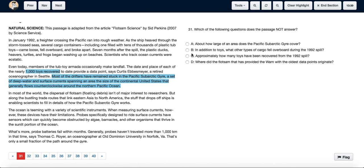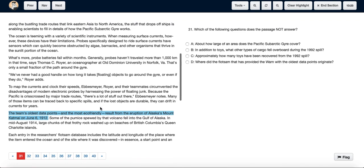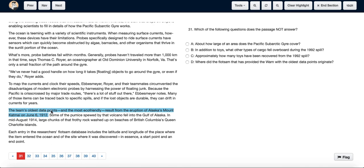Now question D: where did the flotsam that has provided the one with the oldest data points originate? Flotsam means floating debris, as is given in the paragraph. As we go down we see the team's oldest data points and the most eco-friendly result from the